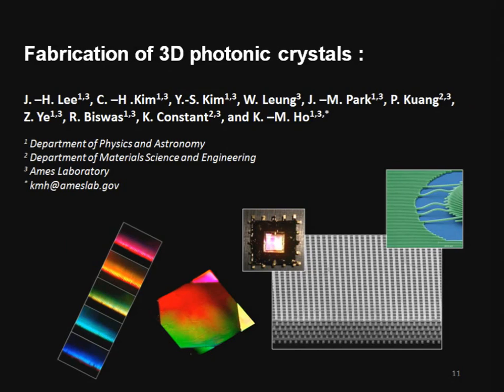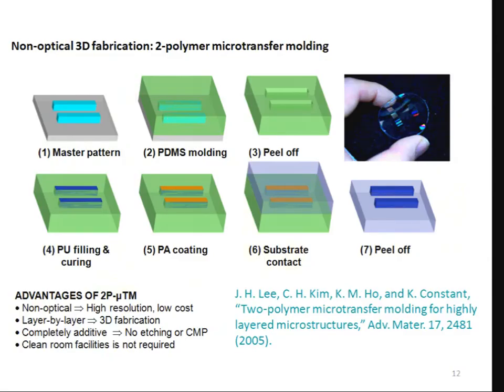We now want to turn attention to the issue of fabrication. A lot of fabrication is still using semiconductor processing. We want to see if there are alternative processing routes which might eventually lead to a roll-to-roll type of fabrication, giving you large area, low cost. This is why we turn to soft lithography.